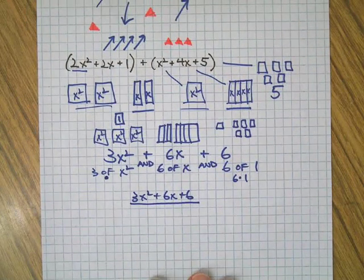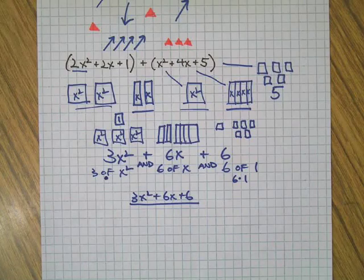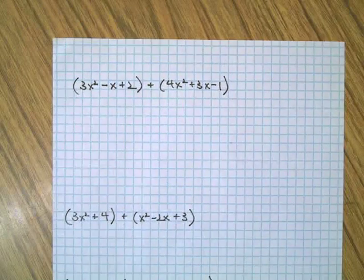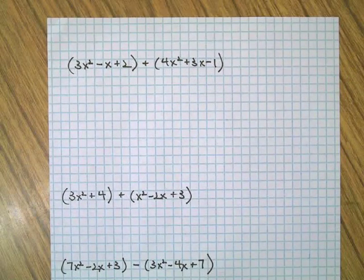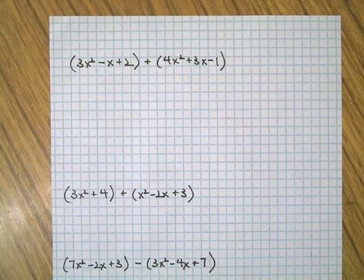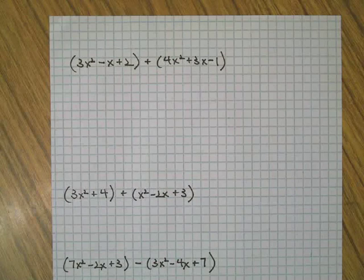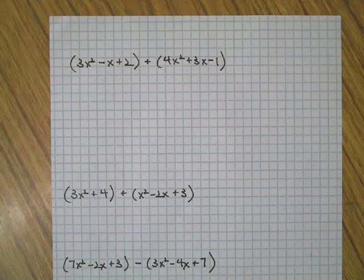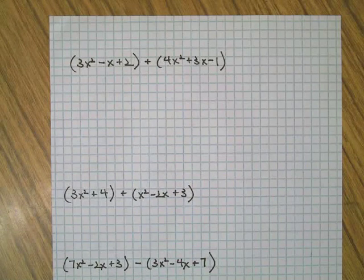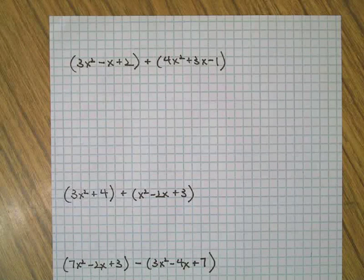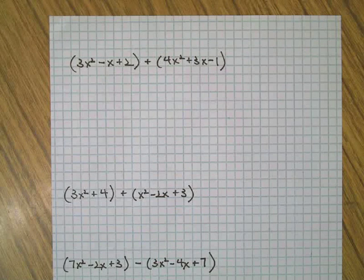That is, combining like terms. All right. Take a shot at this first problem here. Three x squared minus x plus two. And, four x squared plus three x minus one. Go ahead and pause the video. Do what you can with that. And then I'll work the answer out.